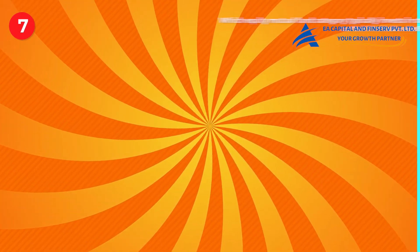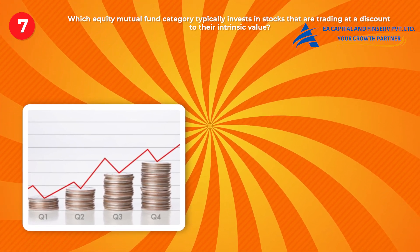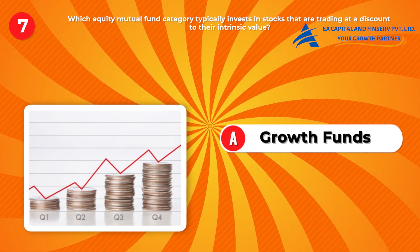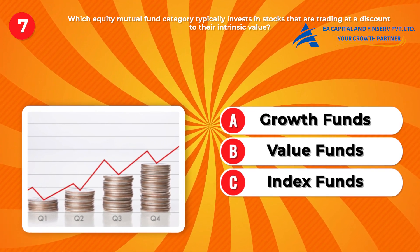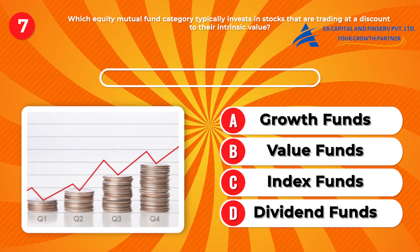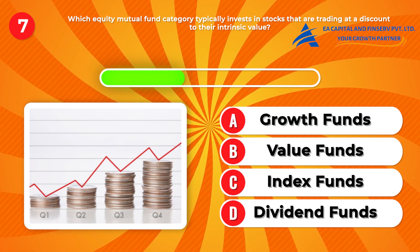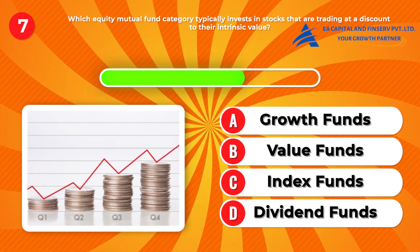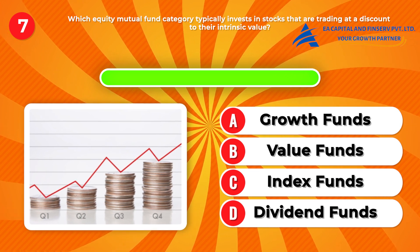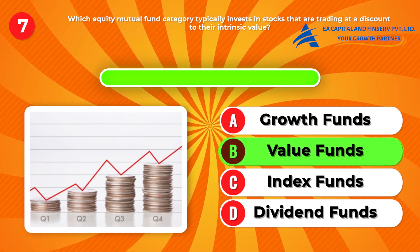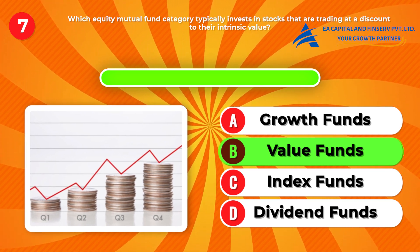Question seven: Which equity mutual fund category typically invests in stocks that are trading at a discount to their intrinsic value? A, growth funds. B, value funds. C, index funds. D, dividend funds. Answer: B, value funds. These funds follow a value investing approach, seeking undervalued stocks with the potential for future appreciation.